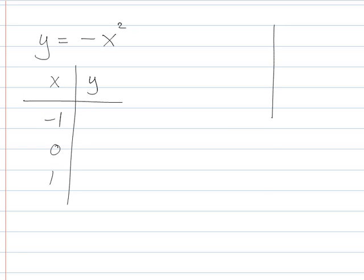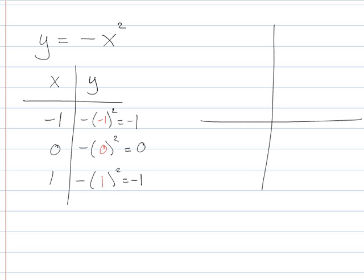So when we plug these in, we see minus negative 1 squared, so it's minus 1. We have minus 0 squared and minus 1 squared. So minus 0 is just 0, and then minus 1 is minus 1.